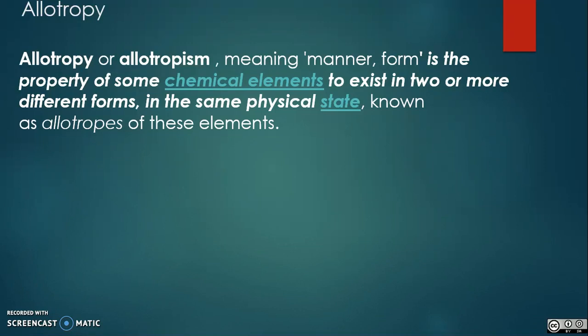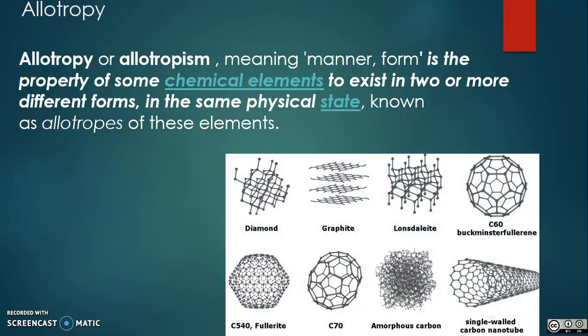Allotropy. Allotropes are different structural modifications of an element. The atoms of the element are bonded together in a different manner. For example, the allotropes of carbon include diamond, graphite, graphene, and fullerenes. The term allotropy is used for elements only, not for compounds.